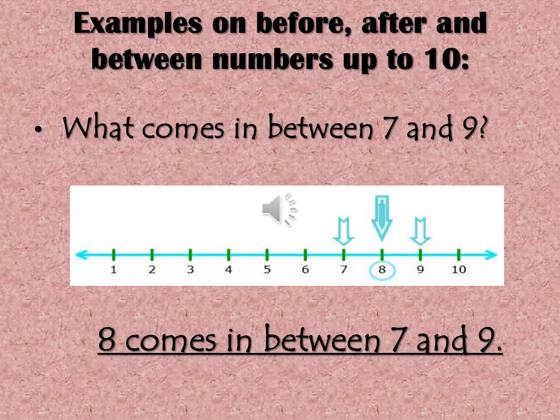Here we are asking: what comes between seven and nine? Let's go down to the number line — one, two, three, four, five, six, seven, eight, nine, and ten. So my question was: what comes between seven and nine? Seven, eight, nine. What comes between seven and nine? It's eight. Eight is the middle number.